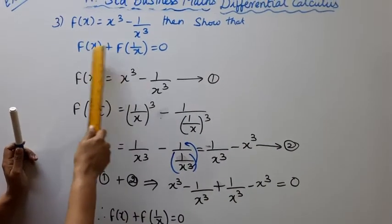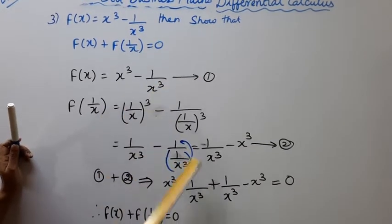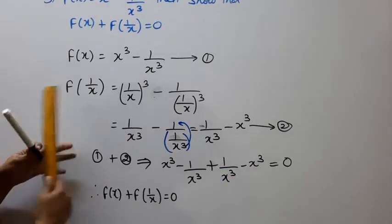Now let's add equation 1 plus equation 2. Equation 1 equals x cubed minus 1 by x cubed. Equation 2 equals 1 by x cubed minus x cubed.